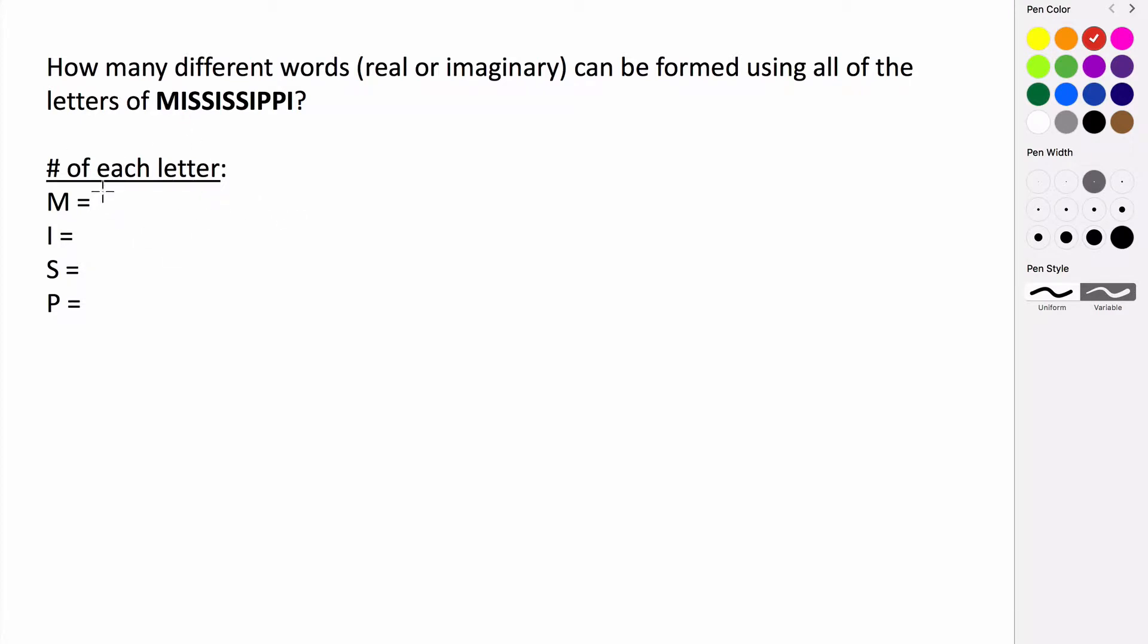So there's only one M. There are one, two, three, four I's. One, two, three, four S's, and two P's, which gives us a total of eleven letters.